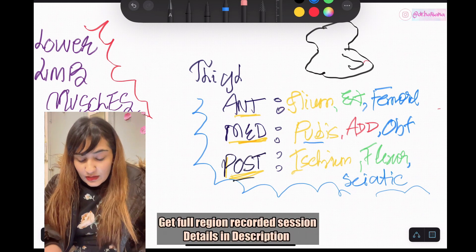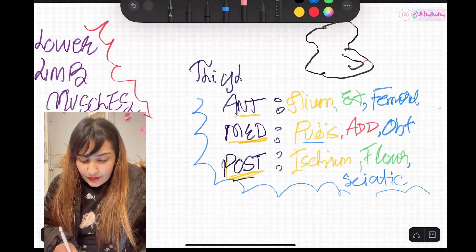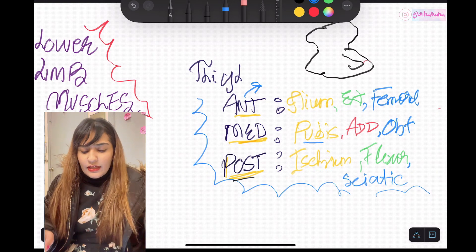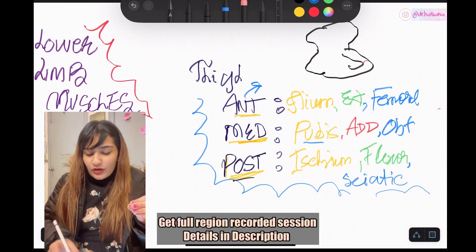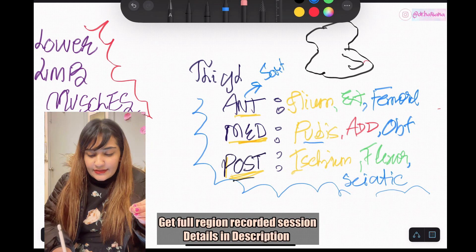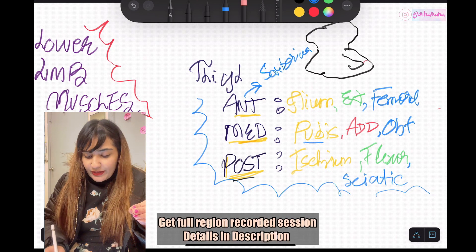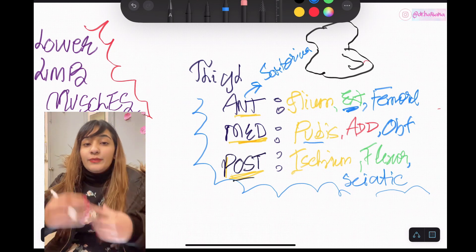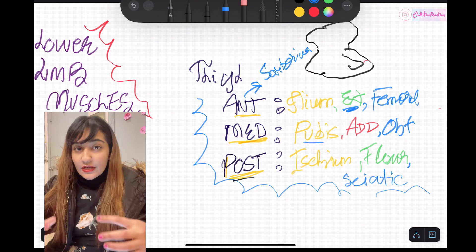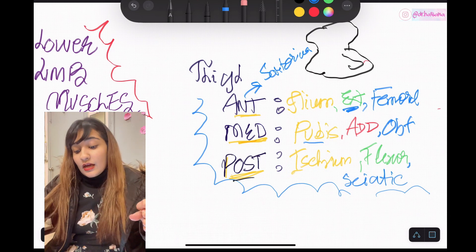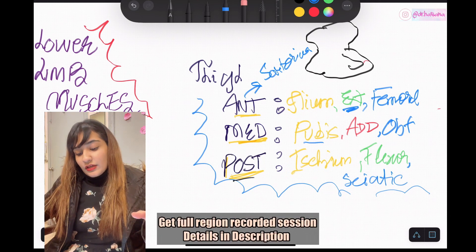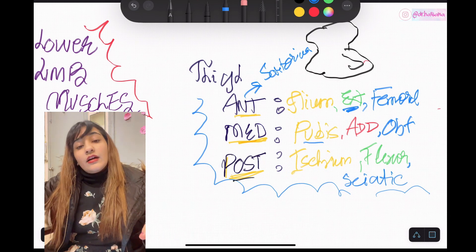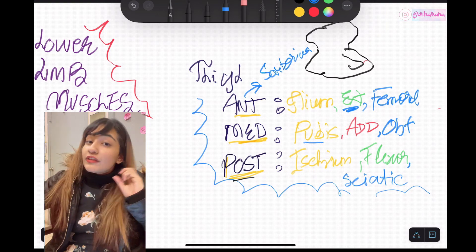There are just a few exceptions I want to talk about. Sartorius is the only exception in the anterior compartment — it is not going to be doing extension. Rather, it will be doing the tailor's muscle position, which is abduction, lateral rotation, and flexion of the knee.